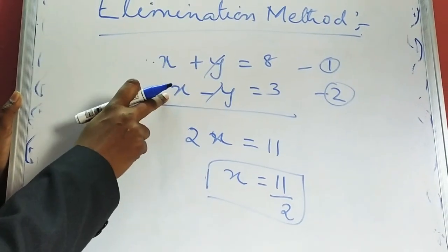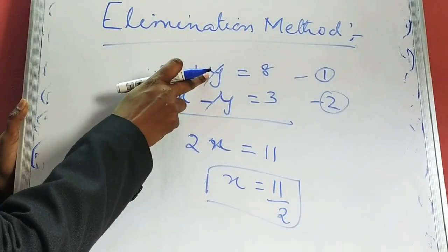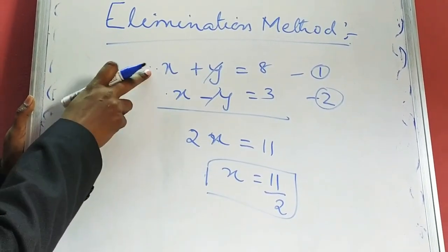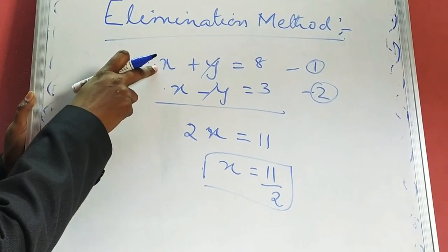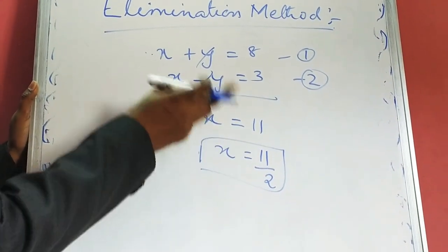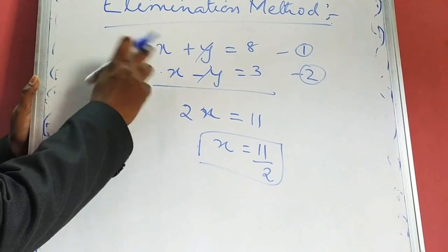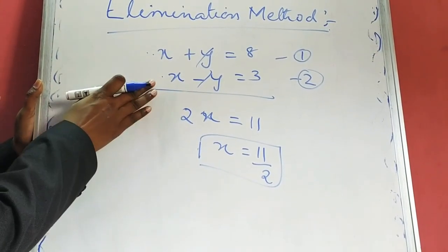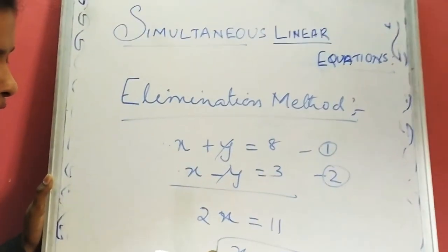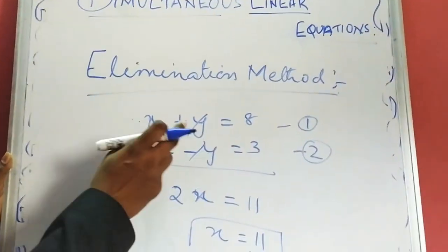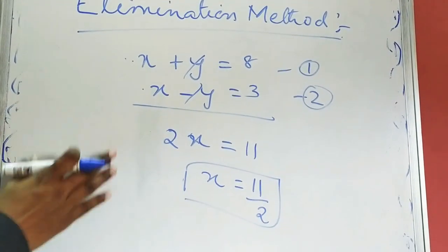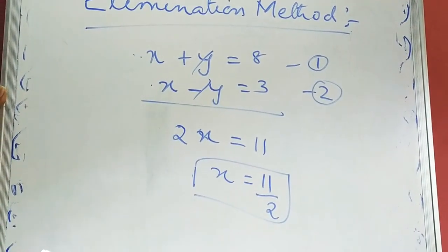When we have a pair of linear equations, we eliminate either of the two variables. We can eliminate the x variable to find y, then substitute that value into the first or second equation. Or we can eliminate the y variable, find x, and substitute into any of the equations to get y. This is how the elimination method works.